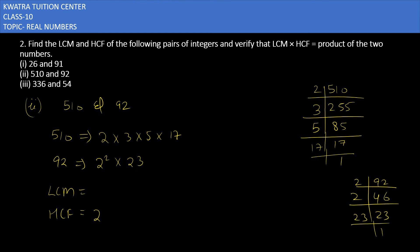And LCM, you have to consider 2², you have to consider 23, you have to consider 3, you have to consider 5, you have to consider 17. Just multiply these all and you will get 23,460.